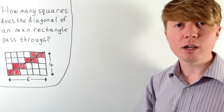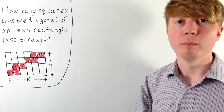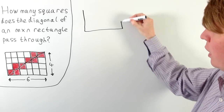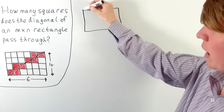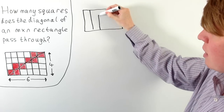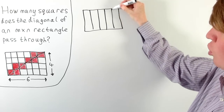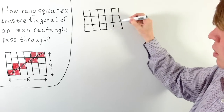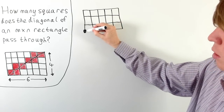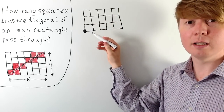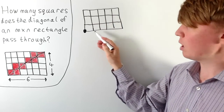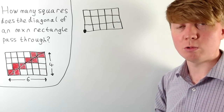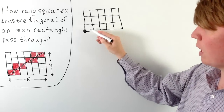There's a really neat argument we can use to solve this problem. We'll illustrate it with an example. For a 5 by 3 rectangle, we draw the diagonal starting in the bottom left corner and going up to the top right corner. As we draw this, we start in the bottom left square, and each time we cross one of the grid lines we enter a new square, so we add 1 to our count.